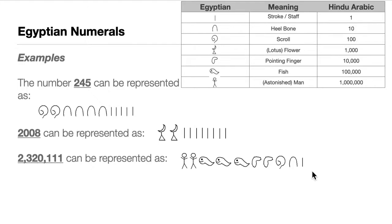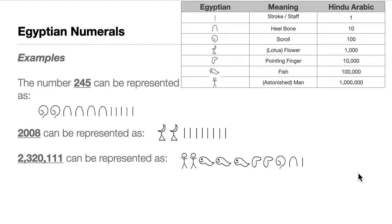The limitation of Egyptian numerals is that each symbol can only be written nine times. So the maximum number you can write is 9,999,999. There are no billions in the Egyptian numeral system.